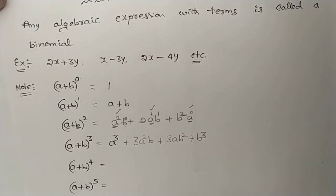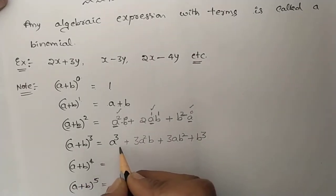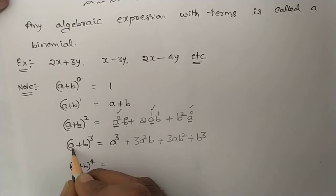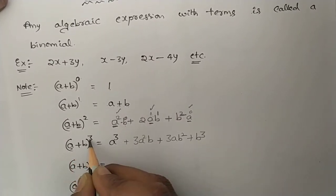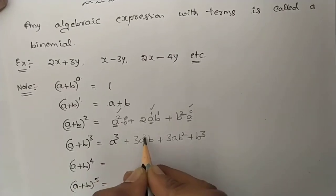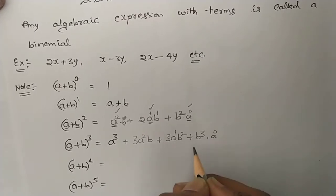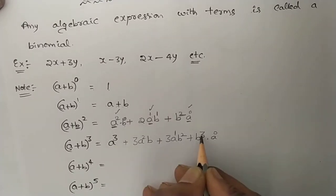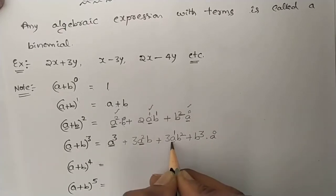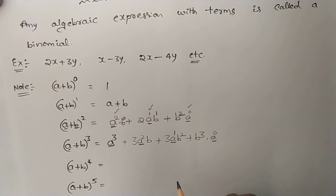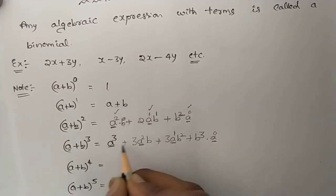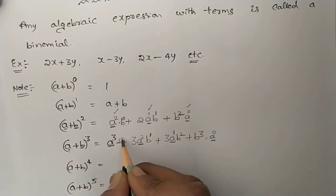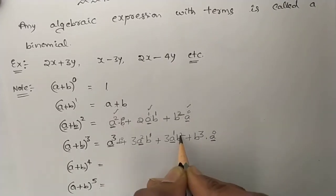Similarly, in the expansion of (a + b)³, the power of the first term is decreasing: a³, a², a¹, a⁰. The power of the second term is increasing: b⁰, b¹, b², b³. So 3, 2, 1, 0 for the first term and 0, 1, 2, 3 for the second term.